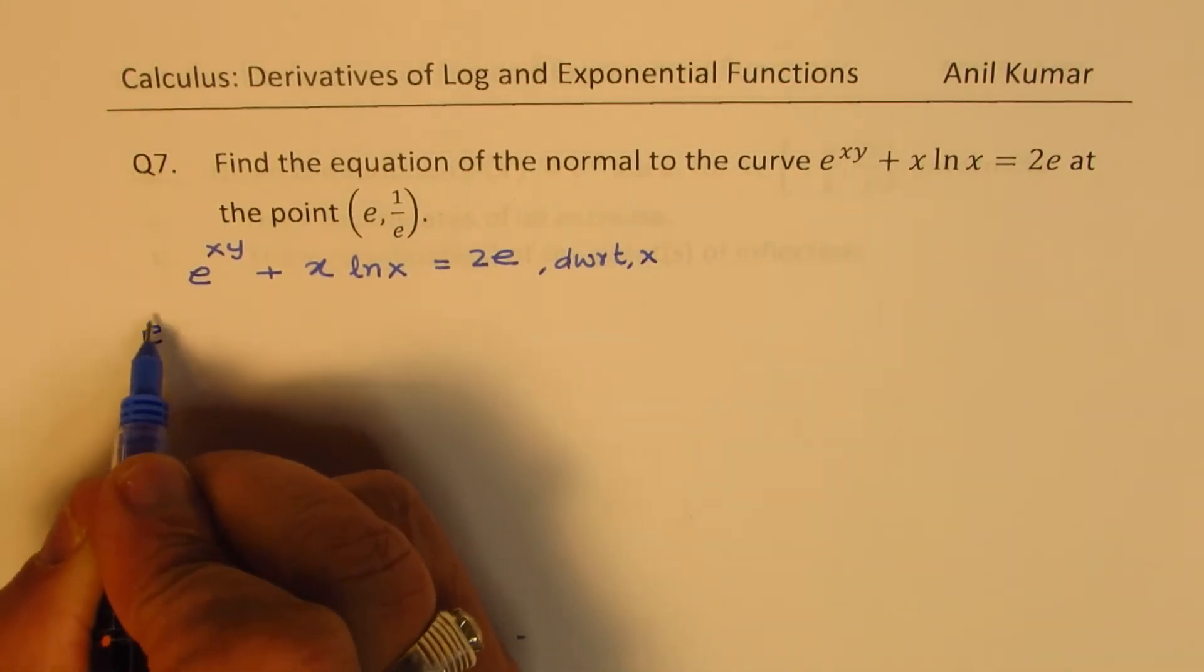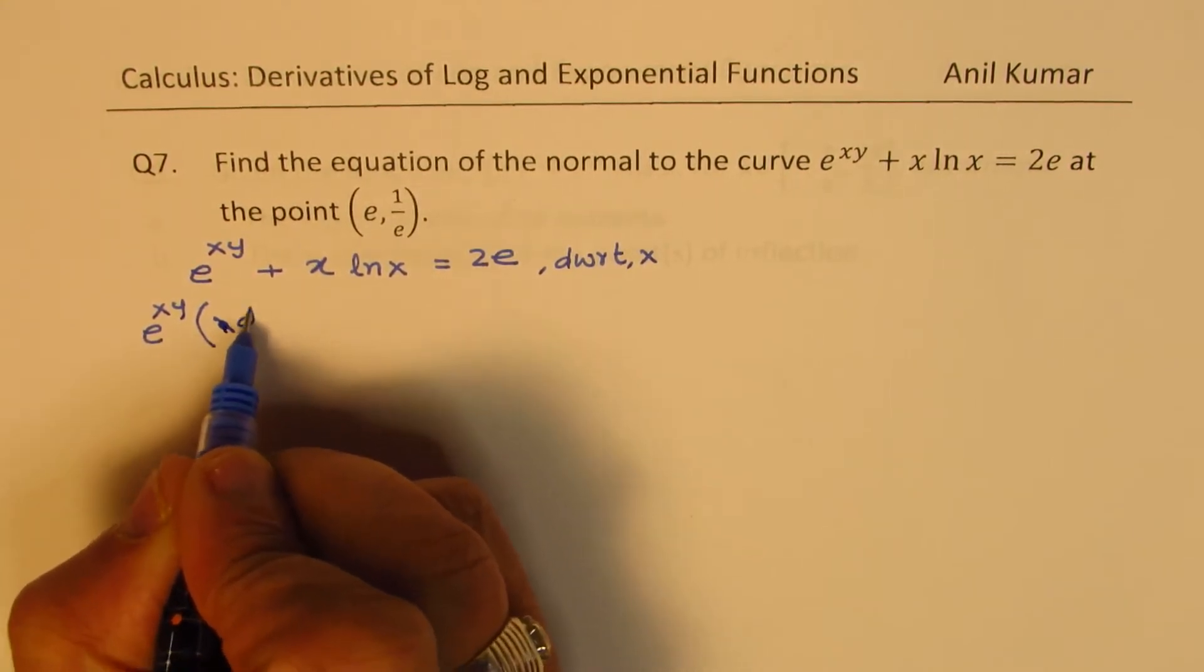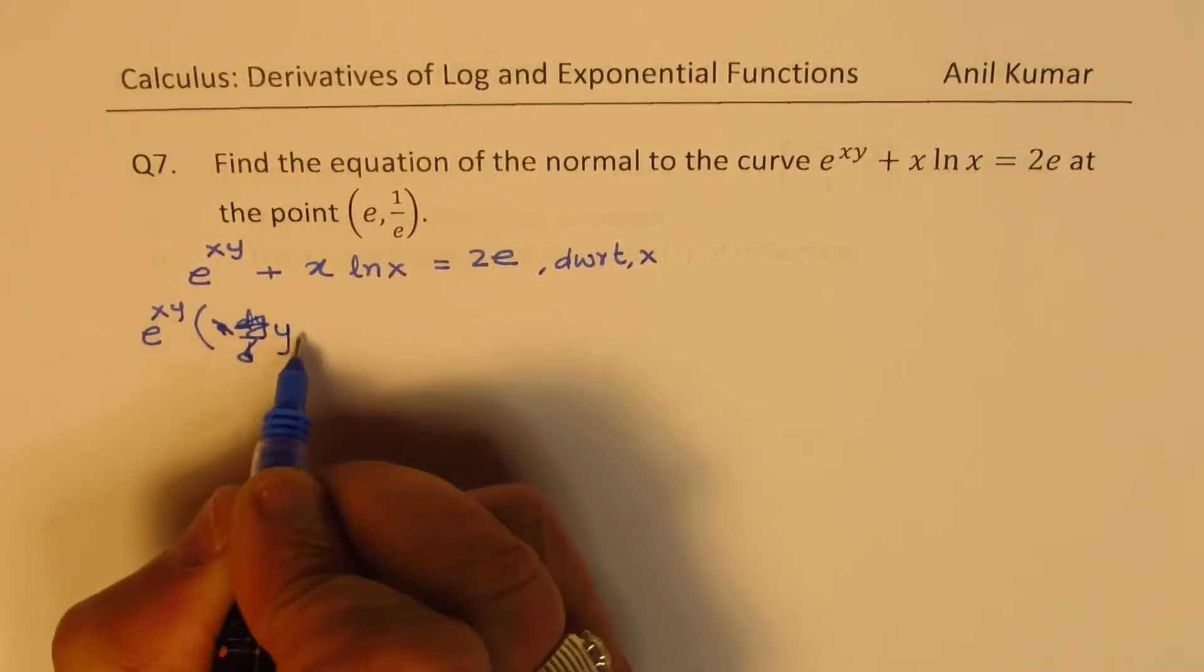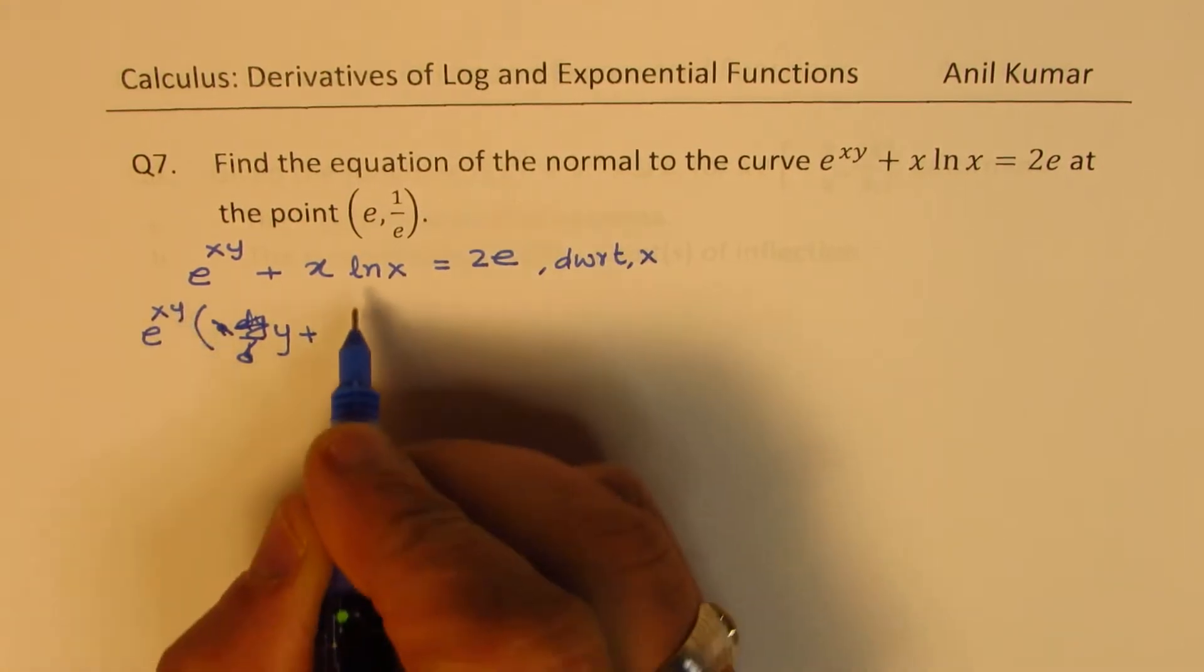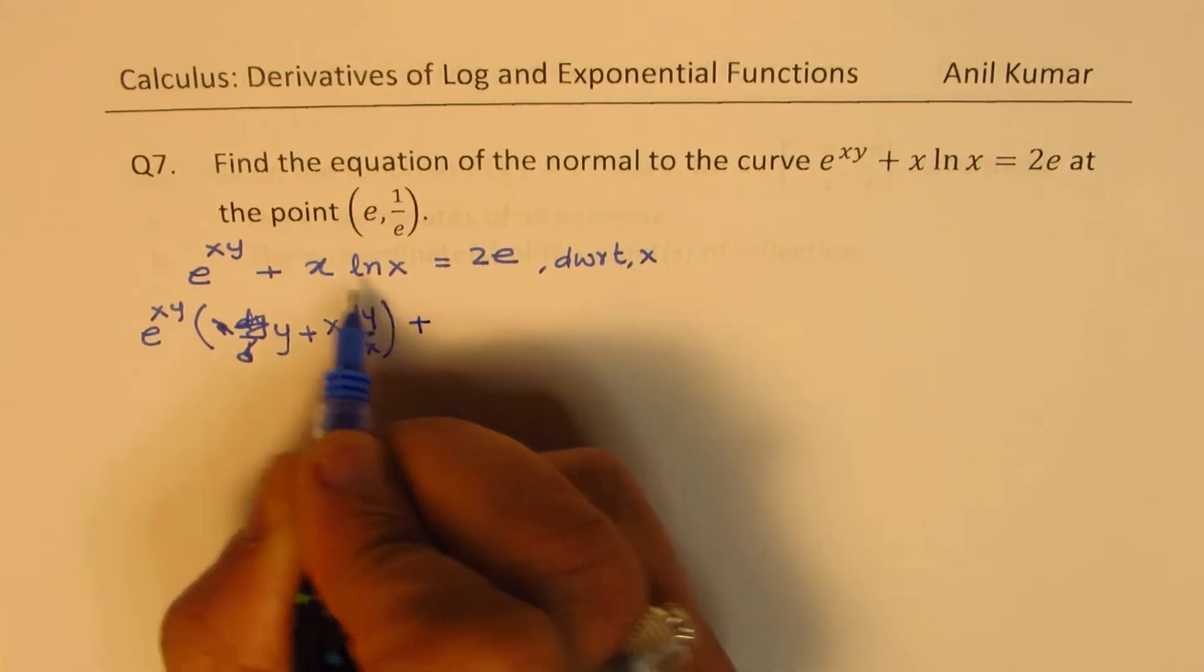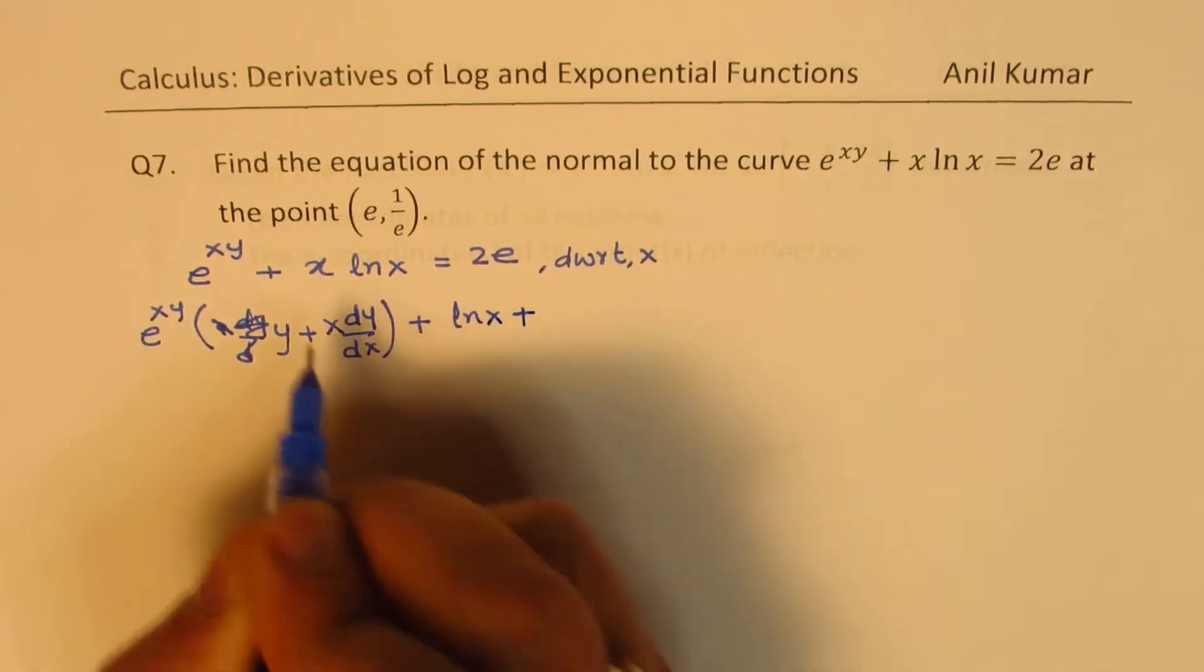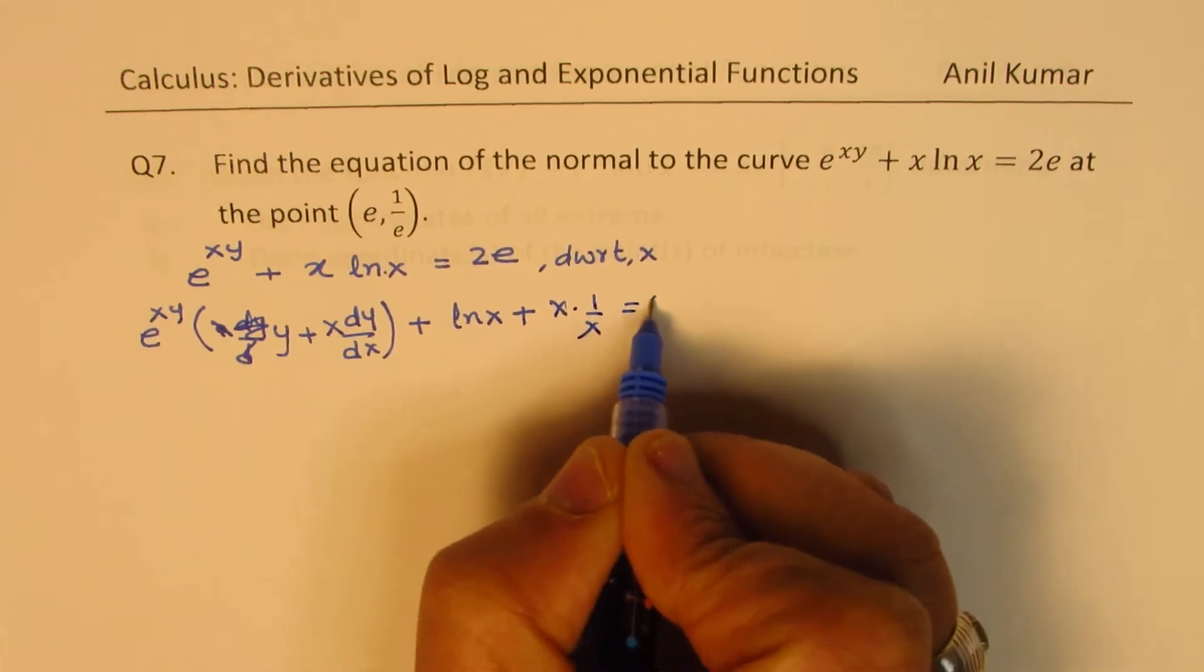We get e^(xy) times y plus x dy/dx. For x ln(x), we use the product rule. The derivative of x is 1, so we get ln(x) plus x times the derivative of ln(x), which is 1/x, equals 0.